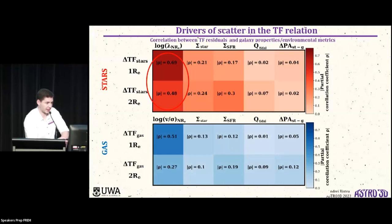For gas, the picture is surprisingly somewhat similar. We see a strong correlation with the V over sigma, which is the degree of turbulence, especially at 1RE in the central parts, not so much at 2RE, but again, no correlation with environment, signs of recent gas accretion or star-forming properties.